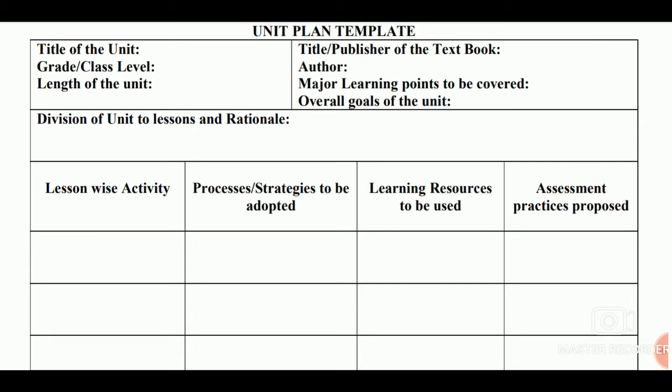Next is the title or publisher of the textbook. If the book has a proper title, we will write that, or we can simply write 'Science Textbook for Class 7'. Then for author, the author will be NCRT. If you are using a different book, then you can write the author accordingly.